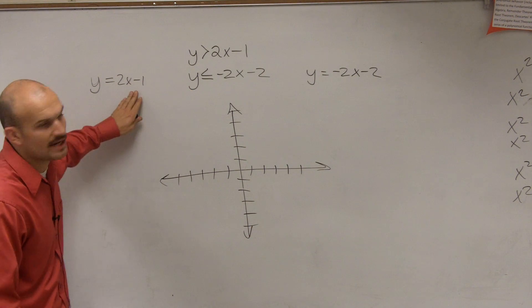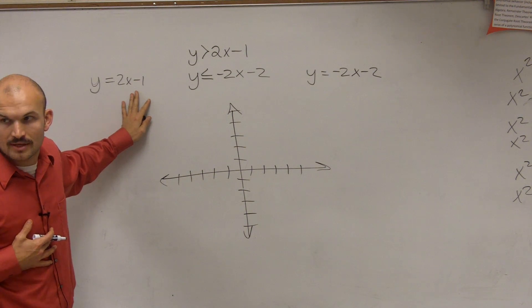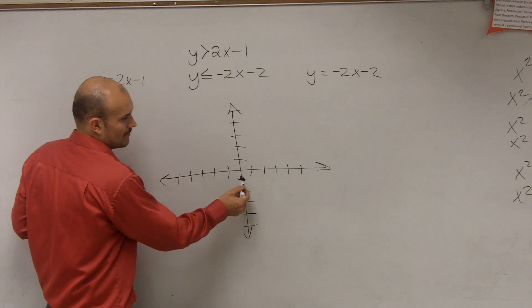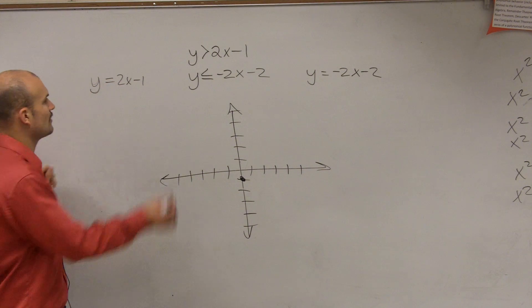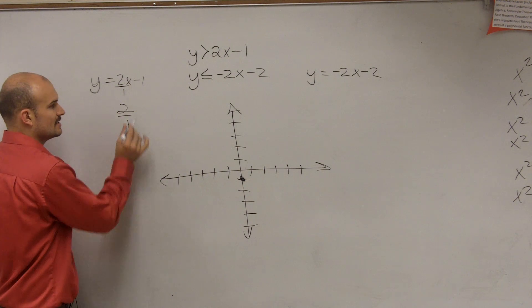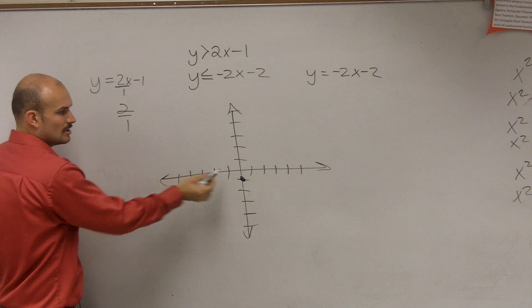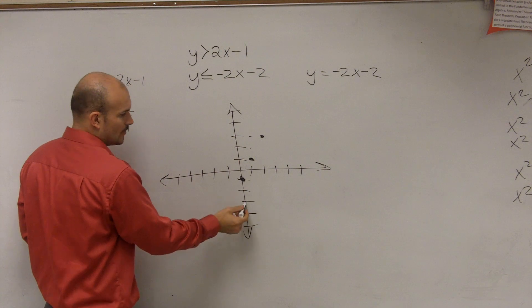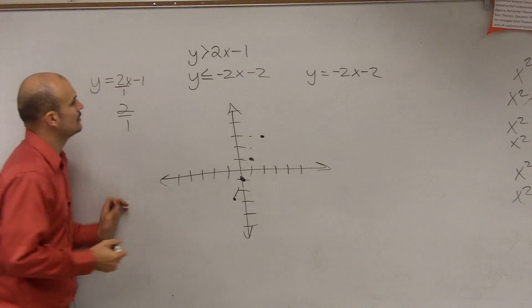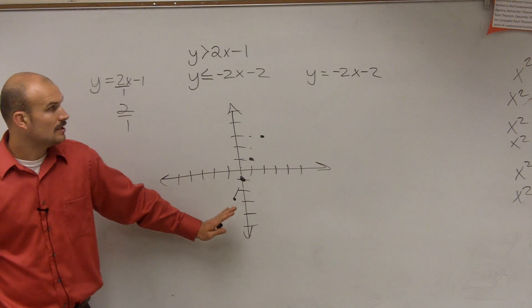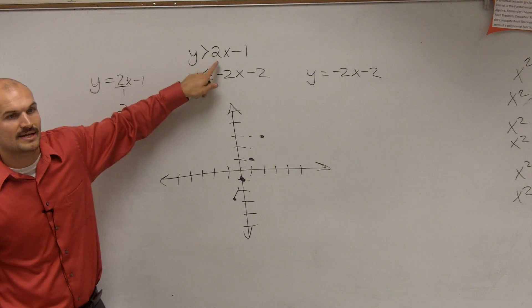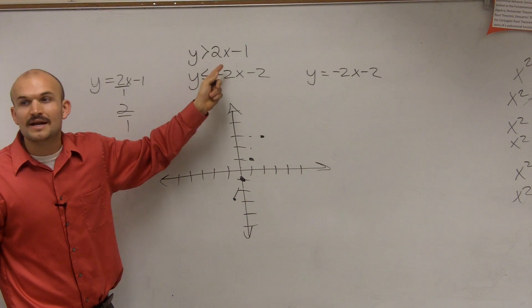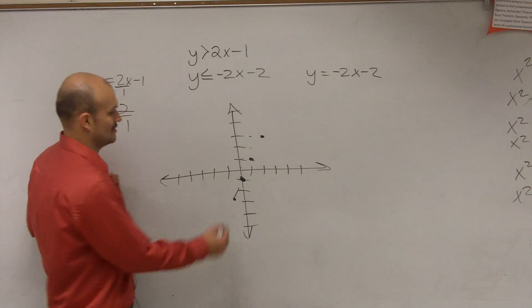When graphing, I'll graph this line first. Remember when graphing in slope-intercept form, the first thing we need to do is find the y-intercept, which is that negative 1. So I go down to negative 1, and I make a nice big dot. Then I write my slope as a fraction. So 2 over 1 is going to tell me to rise 2, go over 1. So I'm going to go up 2 units, to the right 1. Up 2 units, to the right 1. You could also go down and to the left. So I'm not going to graph this yet. Because I want to look at this and then say, what is my inequality sign? Since my inequality sign is greater than and not greater than and equal to, I know that this line is going to be dashed instead of solid.